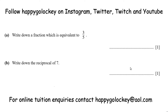Ok guys, back with the worked solutions. The first question: write down a fraction which is equivalent to 3 fifths. It's already in a fraction — 3 fifths — don't worry about that. We want something equivalent. The first part of the word, 'equi', means equal. So basically we want a fraction that's already equal to 3 fifths.